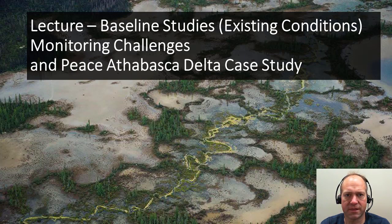I'll finish this lecture with a case study on the Peace-Athabasca Delta, which is highly relevant both to baseline studies and to our case study on the Peace River. The Peace-Athabasca Delta has undergone changes in the last five decades, during which there has been hydroelectric reservoir development, oil sands development, and many other types of human disturbances upstream of the Delta. This makes it very challenging to understand what the natural baseline was and what caused any changes observed since then.